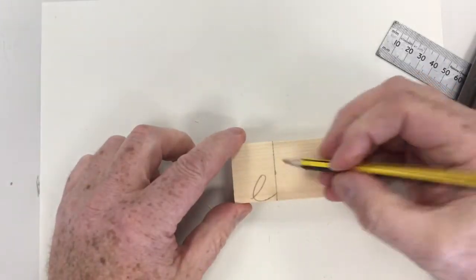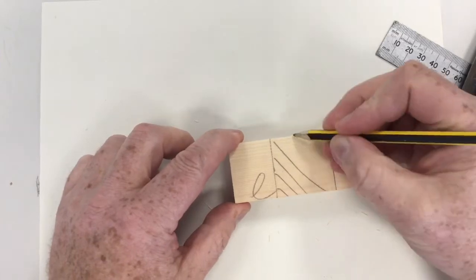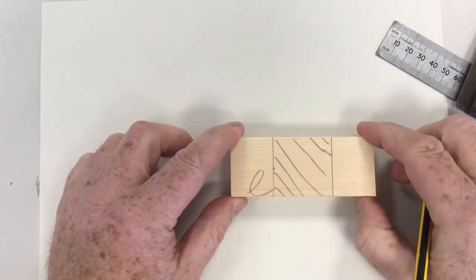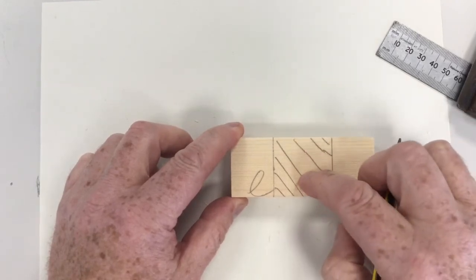Now this bit we're going to remove. So we're going to mark this, identify this as waste wood. We're using the hatching lines or waste wood lines to identify that. So then we know that this is the bit we're going to take away.